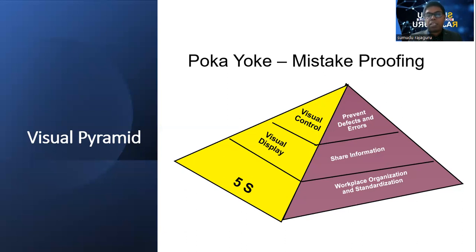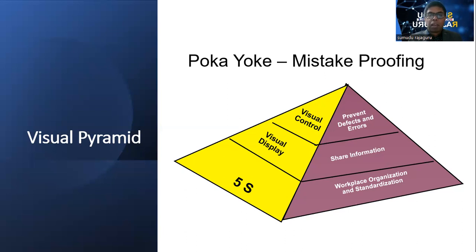When we talk about the second element, it is visual display. Usually, visual displays are used to share information. When we consider the organization, there can be several visual displays — for example, buyer's code of conduct, buyer's quality-related information. When we go to the manufacturing plant, there can be some mock-ups and standard procedures. There are a lot of visual displays. The important thing to understand is that visual displays share information.